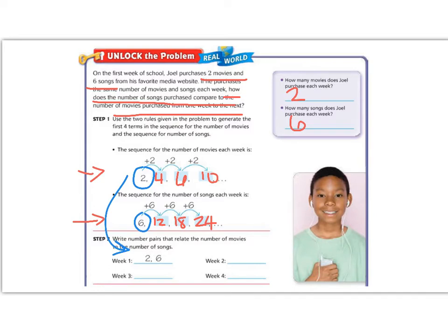Now if we look at the second number, we have four movies and twelve songs. So I'm going to write that four, comma, twelve. Then week three, we have six, comma, eighteen. And week four, we would have ten, comma, twenty-four. So you can see we're looking at the relationship between those two numbers.